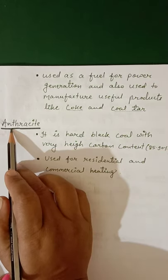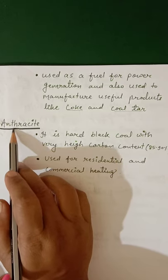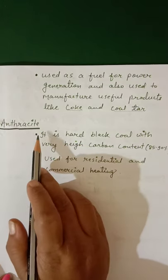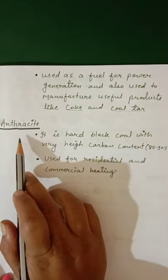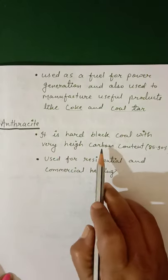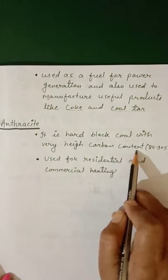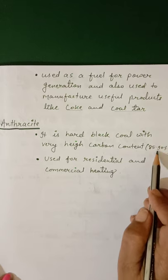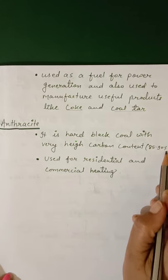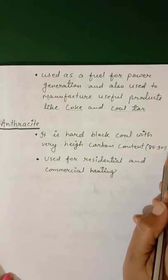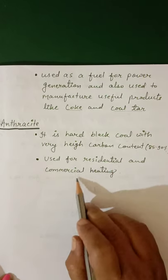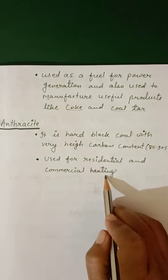The fourth type of coal is anthracite. It is the highest rank of coal — hard and black with very high carbon content, that is 85 to 90% carbon. It is used for residential and commercial heating.